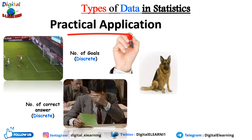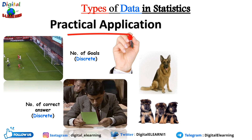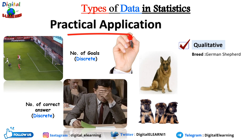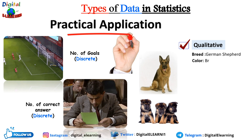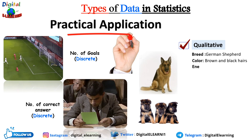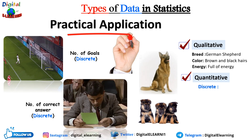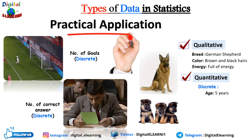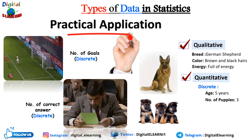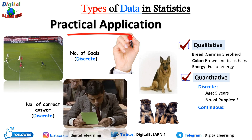Dogs can have both qualitative and quantitative attributes, as well as discrete and continuous characteristics. For qualitative attributes: the breed of the dog is qualitative — in this case, it is a German Shepherd. The color is qualitative too — black and brown hair. The energy level is also qualitative — this dog is full of energy. Now let's look at quantitative data: under discrete data, we have age — five years — and the number of puppies — three. You cannot have two and a half puppies; it is always a whole number.